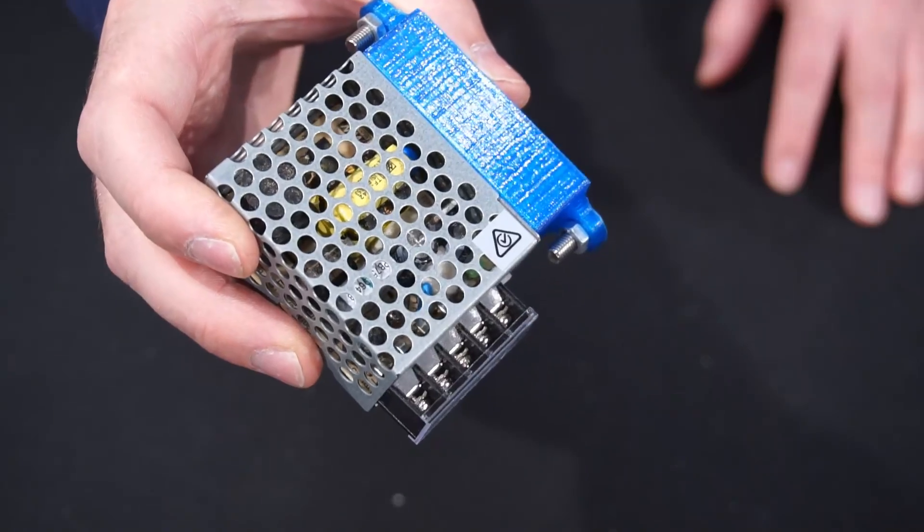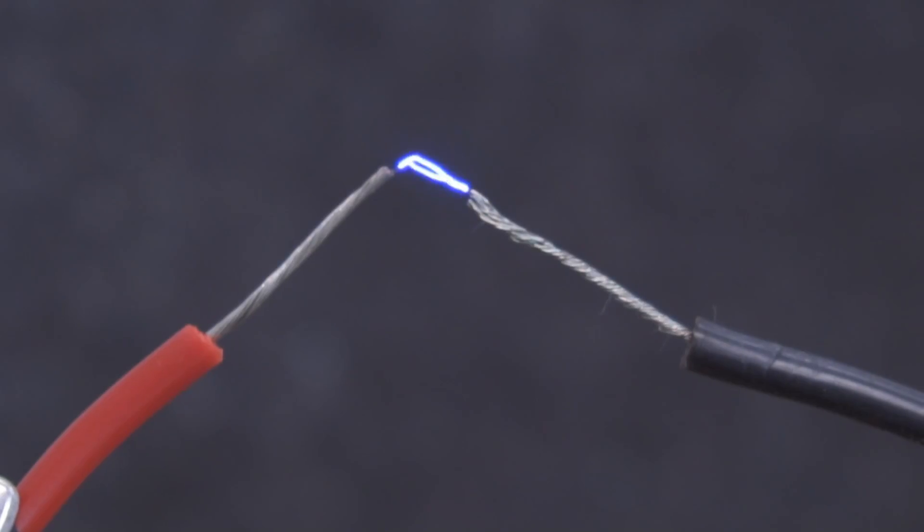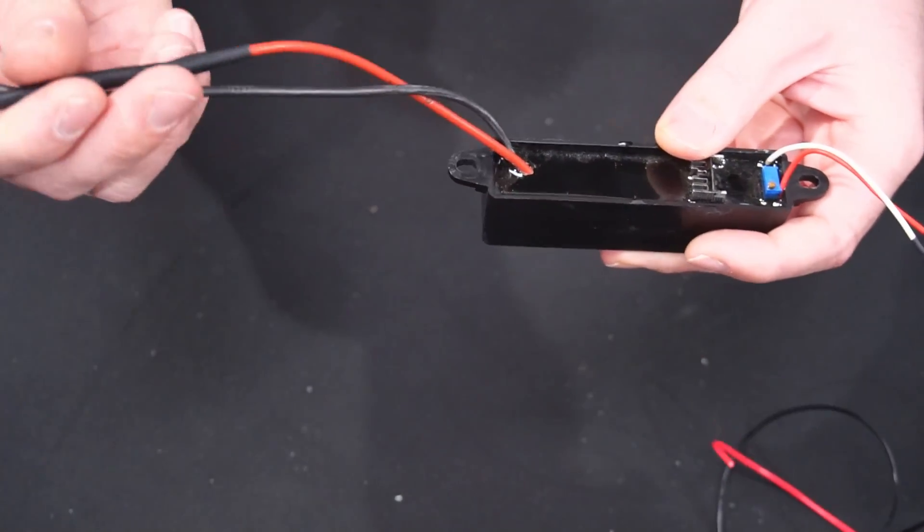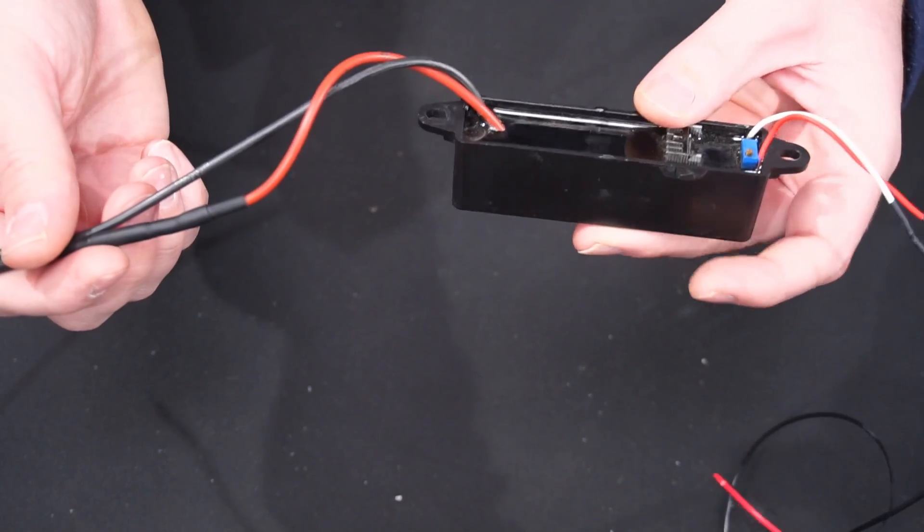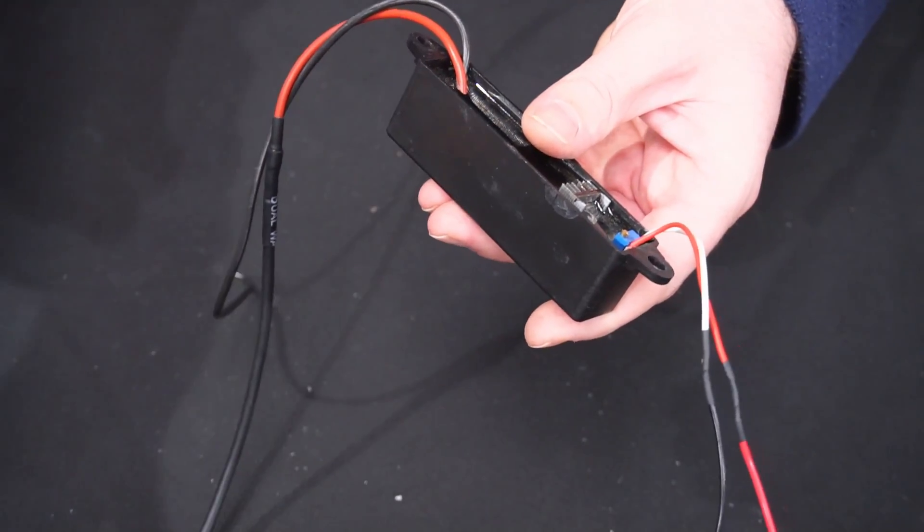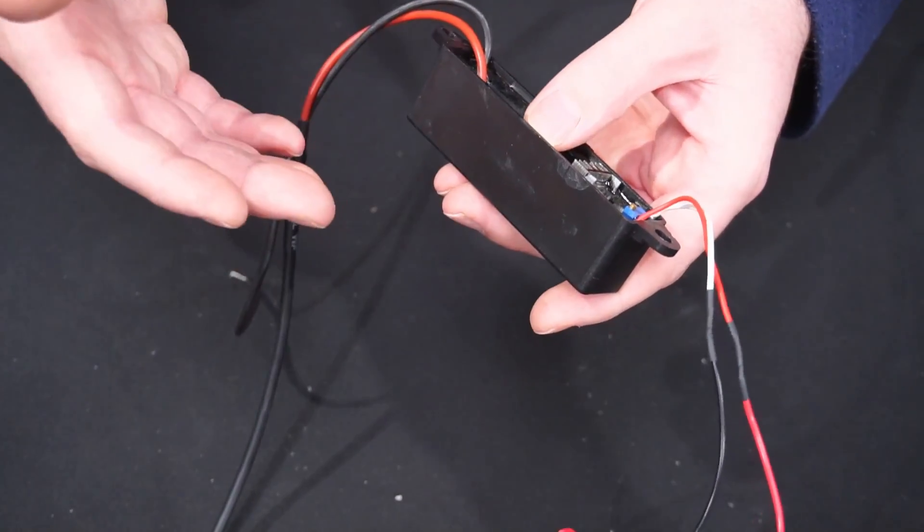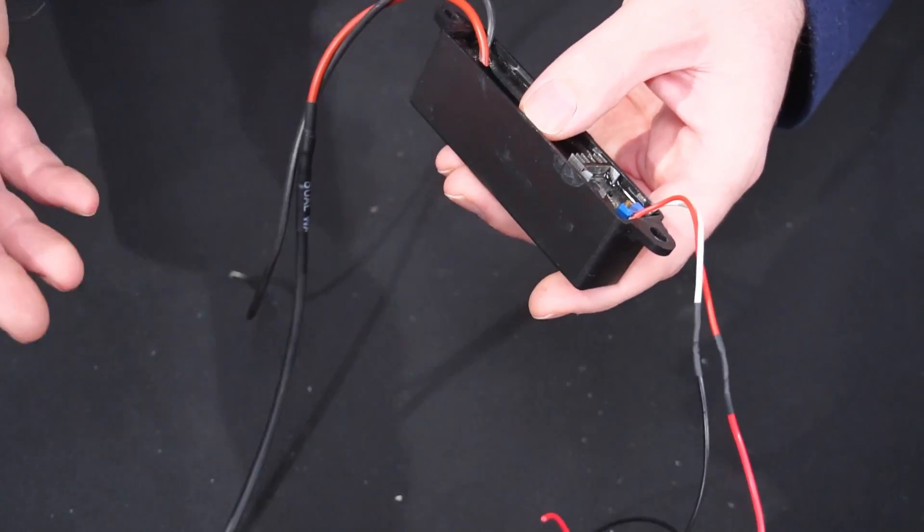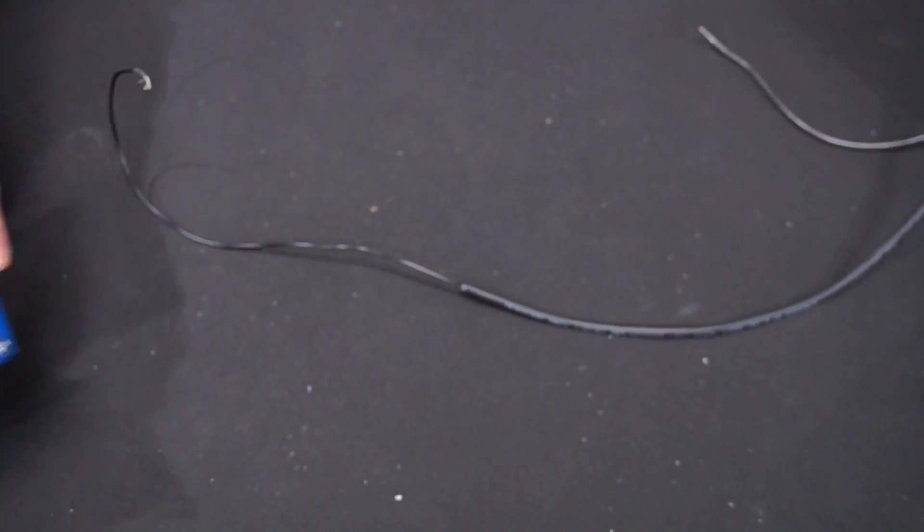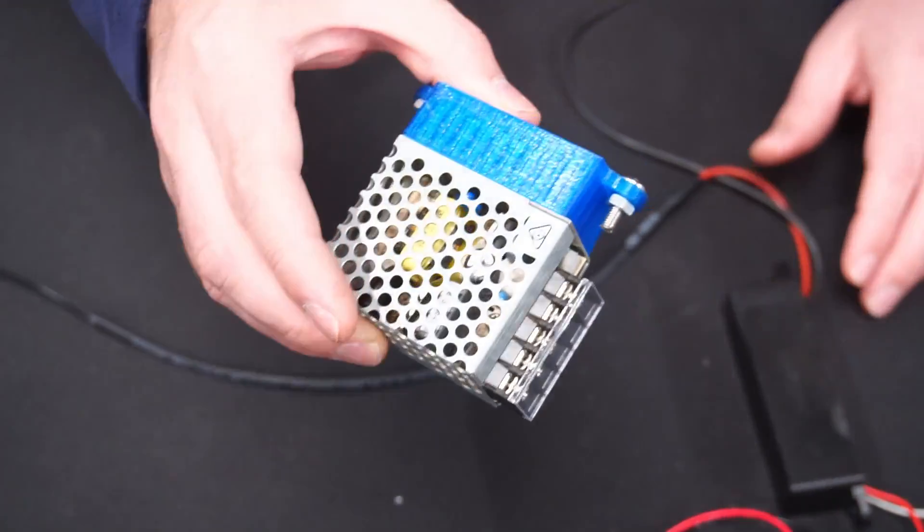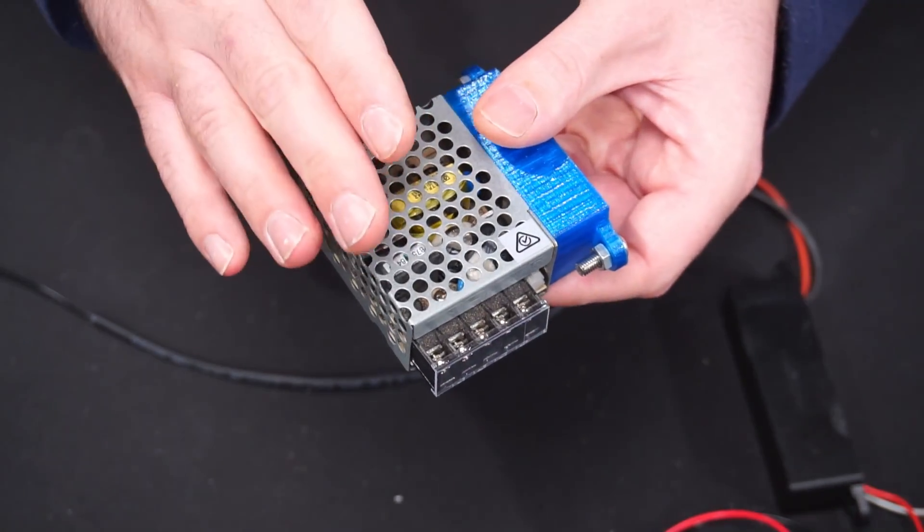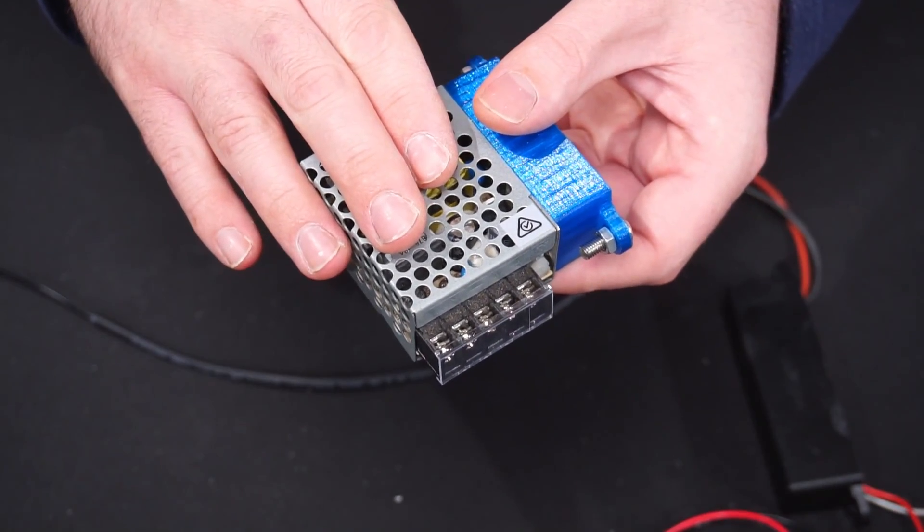So why do I need a second 12 volt power supply? Well it's to run this. This is a high voltage step up or boost converter and it transforms 12 volts DC to over 20,000 volts DC on the output. Now if I ran this from my big power supply and an arc occurred it could travel through the power supply perhaps even through the coolers and destroy everything. So by running the high voltage boost converter from a separate smaller power supply if an arc occurred hopefully this is the only thing that gets damaged.